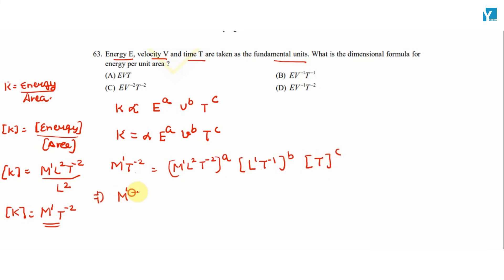Which implies M1 T-2 is equal to individual terms collected: M raised to power a, L raised to power 2a plus b, and T raised to power -2a minus b plus c.